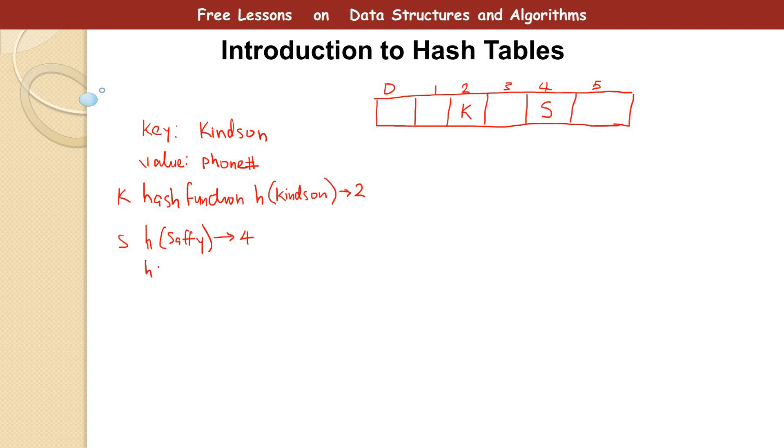Let's try another one. We have some other person's name who we want to add, Jackie. After passing through the hash function, it gives us a location of 1. It means that we need to store Jackie in position 1. Take note that if you pass the same name several times into the hash function, it's going to always produce the same hash value.